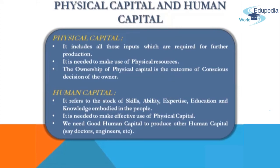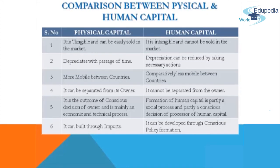Now we will do the comparison between the two — physical capital and human capital. First, physical capital is tangible and can easily be sold in the market. Tangible means which can be touched. On the contrary, human capital is intangible and cannot be sold in the market. Next, physical capital depreciates with the passage of time. On the other hand, depreciation in human capital can be reduced by making continuous investment in education and health. Third, physical capital is more mobile between countries, whereas human capital is less mobile between countries as compared to physical capital.